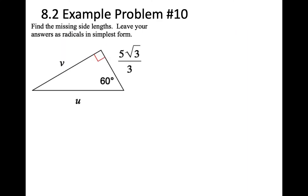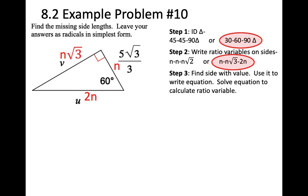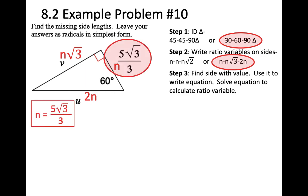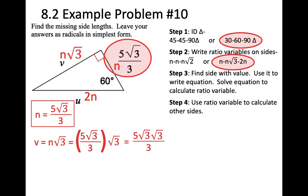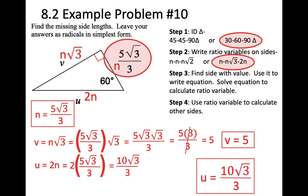Problem 10: it's a 30-60-90 with ratios N, N root 3, 2N. Put those on the triangle. The equation gives N equals 5 root 3 over 3 — already solved. V equals N root 3, which is (5 root 3 over 3) times root 3. Root 3 times root 3 is 3, the 3s cancel, so V equals 5. U equals 2N, which is 2 times (5 root 3 over 3), giving 10 root 3 over 3.